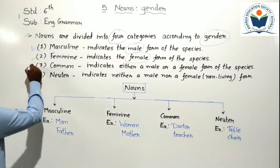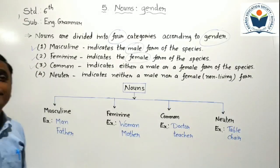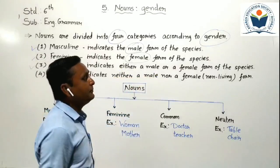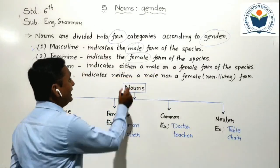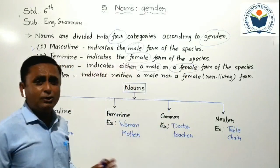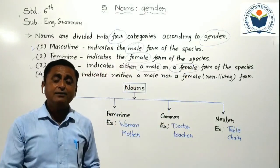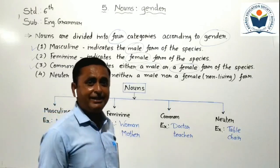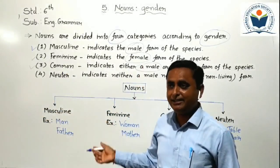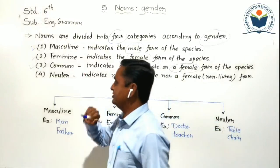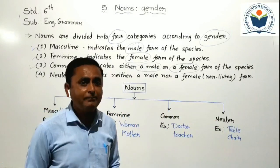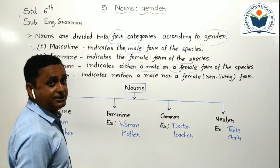Now the third type is common gender. Common gender indicates either a male or a female form of the species. It is not decided whether it is male or female. At that time, if a living thing is there but not decided, we have to use it as a common gender.